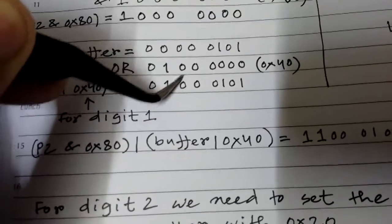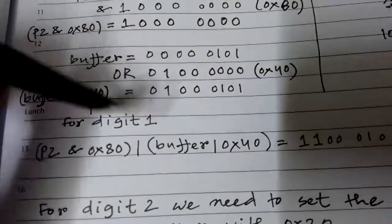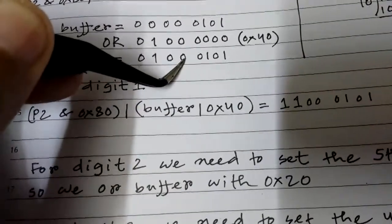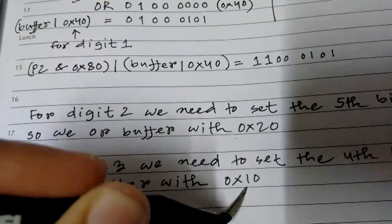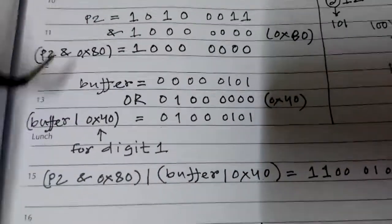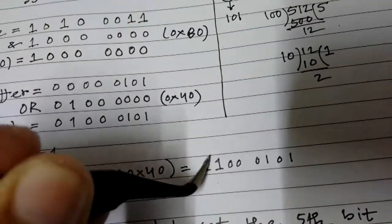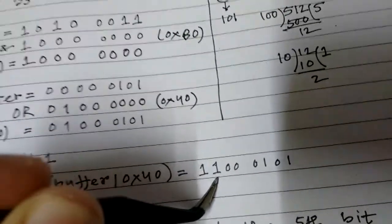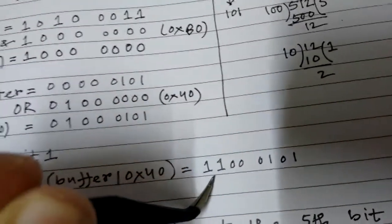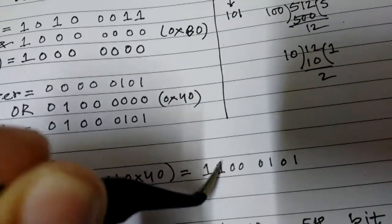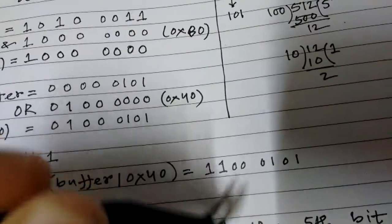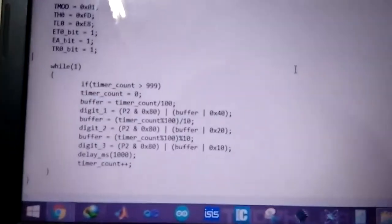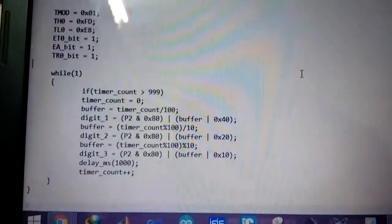For digit 2, we need to set this one, so that would be hex 0x20. And for digit 3, we need to set this bit, so it's hex 0x10. So this result and this result is ORed. Now we leave the 7th bit unaffected, and we also have set the digit to display and which display is active. So in this case, this is digit 1. And for other digits, we do the same thing.